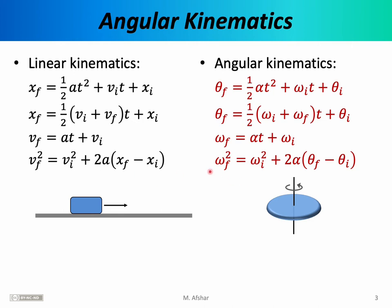If you compare these two sets of equations, you will notice that the equations on the right are really identical to the ones on the left, except that x has been replaced by theta, a has been replaced by alpha, and v has been replaced by omega. This should not be surprising. After all, x, v, and a are related to each other in exactly the same way that theta, omega, and alpha are related — through derivatives.